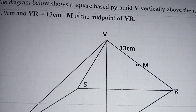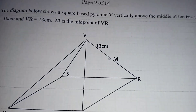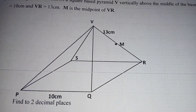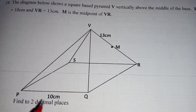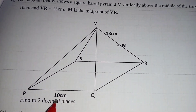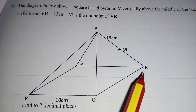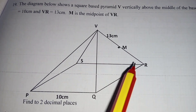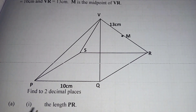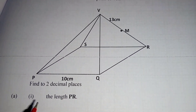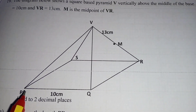V is vertically above the midpoint of the base. PQ is equal to 10 centimeters and VR is equal to 13 centimeters. M is the midpoint of VR. We are asked to find, to two decimal places, the length PR.